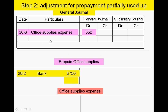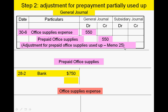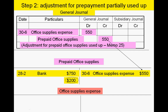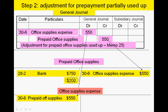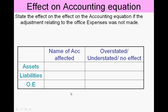We have $200 left, so in our general journal $750 minus $200 means we've consumed $550 of those office supplies. Follow the golden rule for balance day adjustments: debit the expense and credit the asset. In the general ledger, decrease the asset account so that the final balance of $200 matches the stock take figure. The difference between what we started with and what remains is the expense.